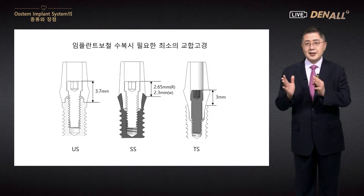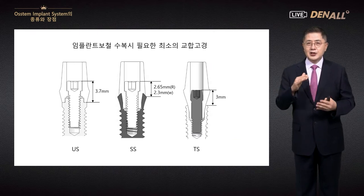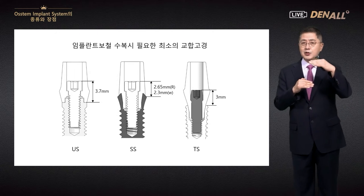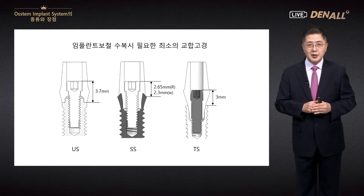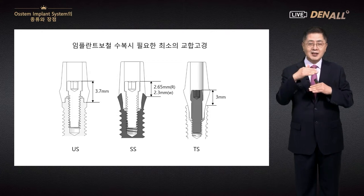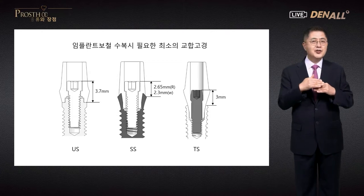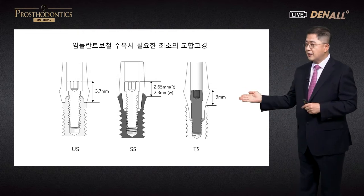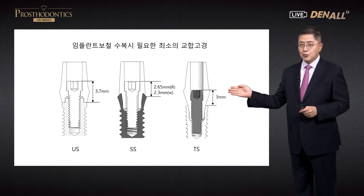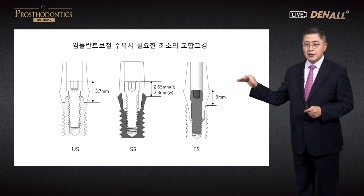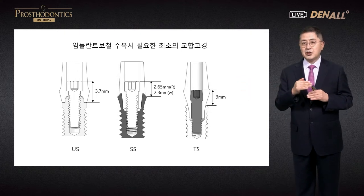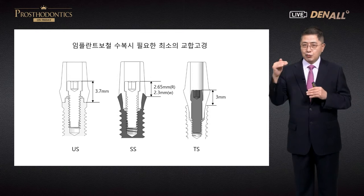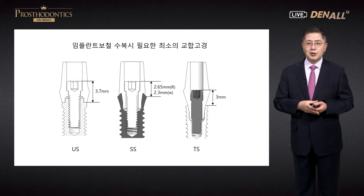US, SS, and TS sections are displayed here. When doing implant prosthesis, a common question is: what is the appropriate gap from the top of the implant to the opposing tooth, especially when the vertical gap is short? The height from the top of the implant to the head of the abutment screw is: US 3.7 mm, SS 2.3 to 2.65 mm, and TS 3.0 mm. These are the minimum prosthesis heights — the head of the screw cannot be ground off.